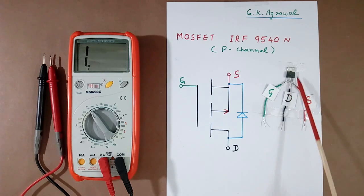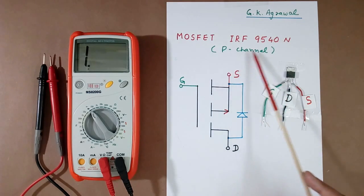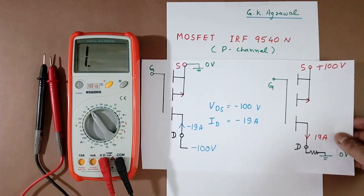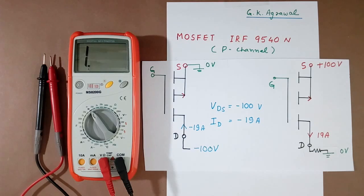Before we start the testing of this MOSFET, I will explain something about P channel MOSFET. Here I have shown two MOSFET circuits, one here, one here. The difference is: here source terminal is grounded to 0V, here drain terminal is grounded to 0V using one load.